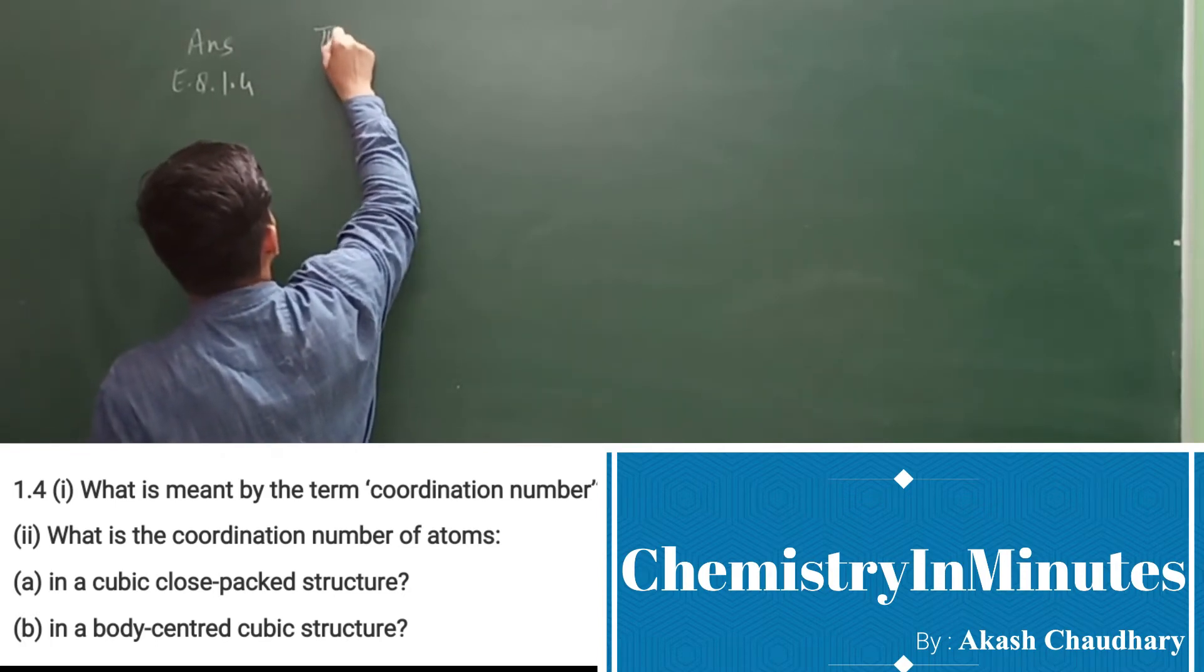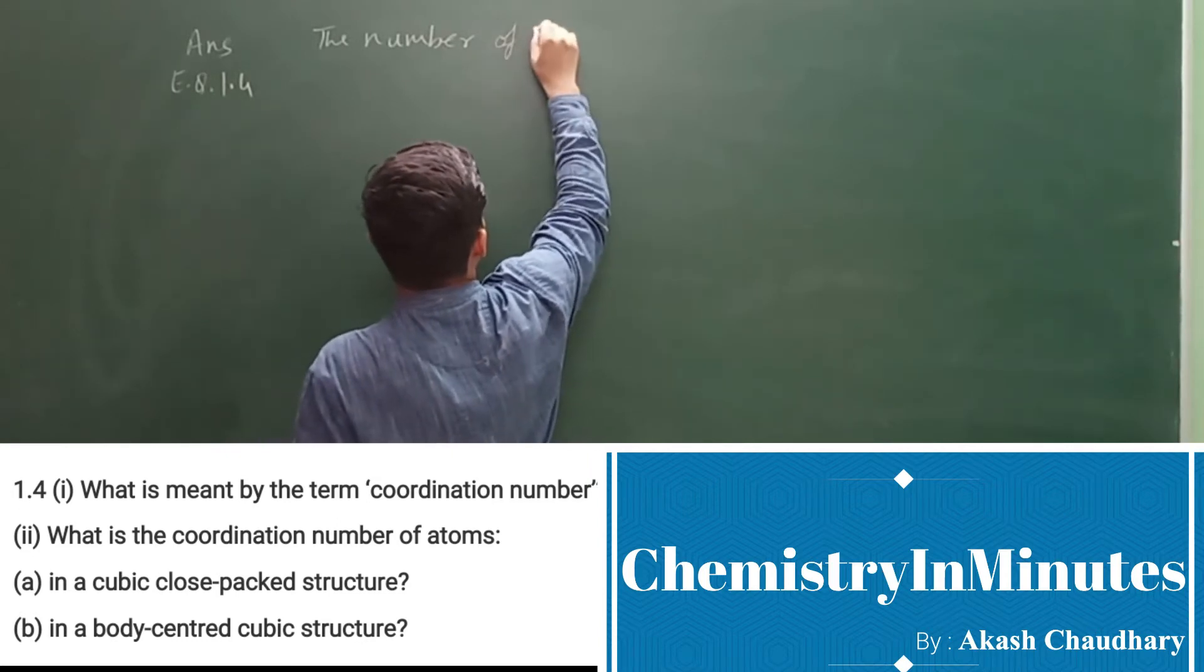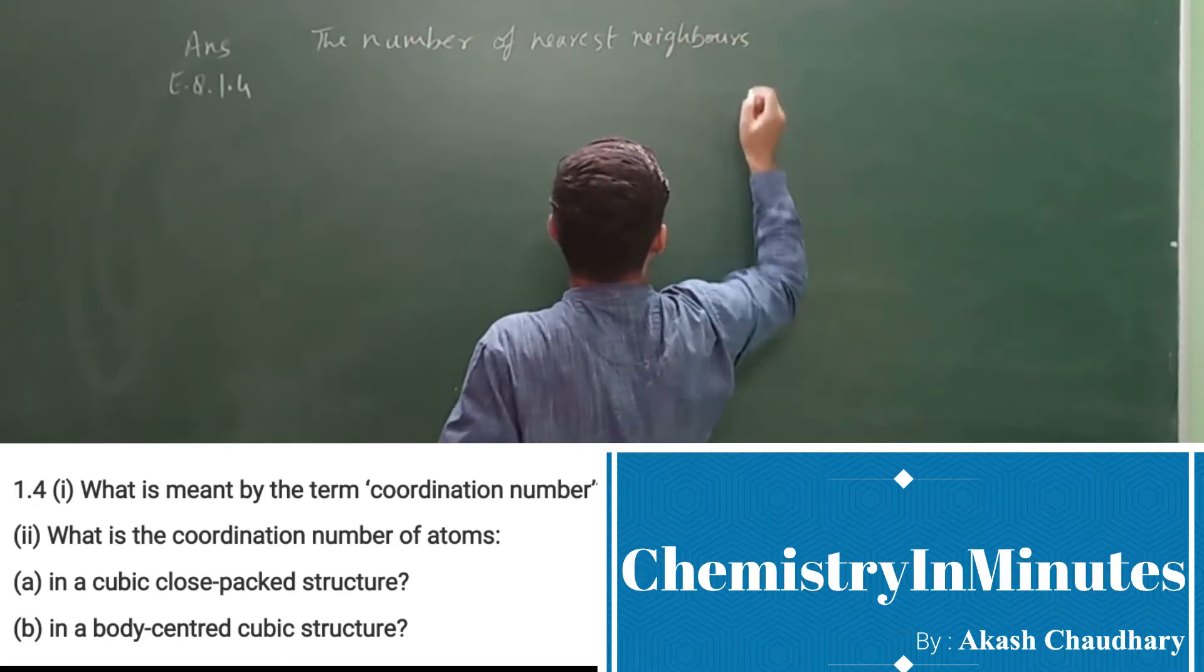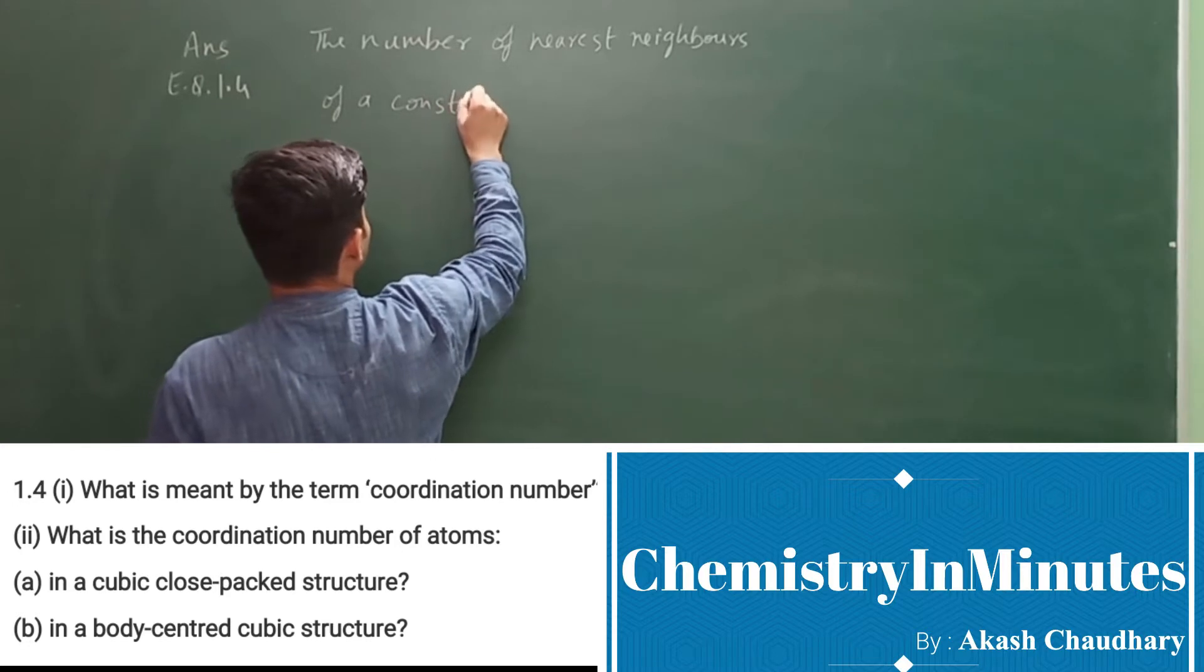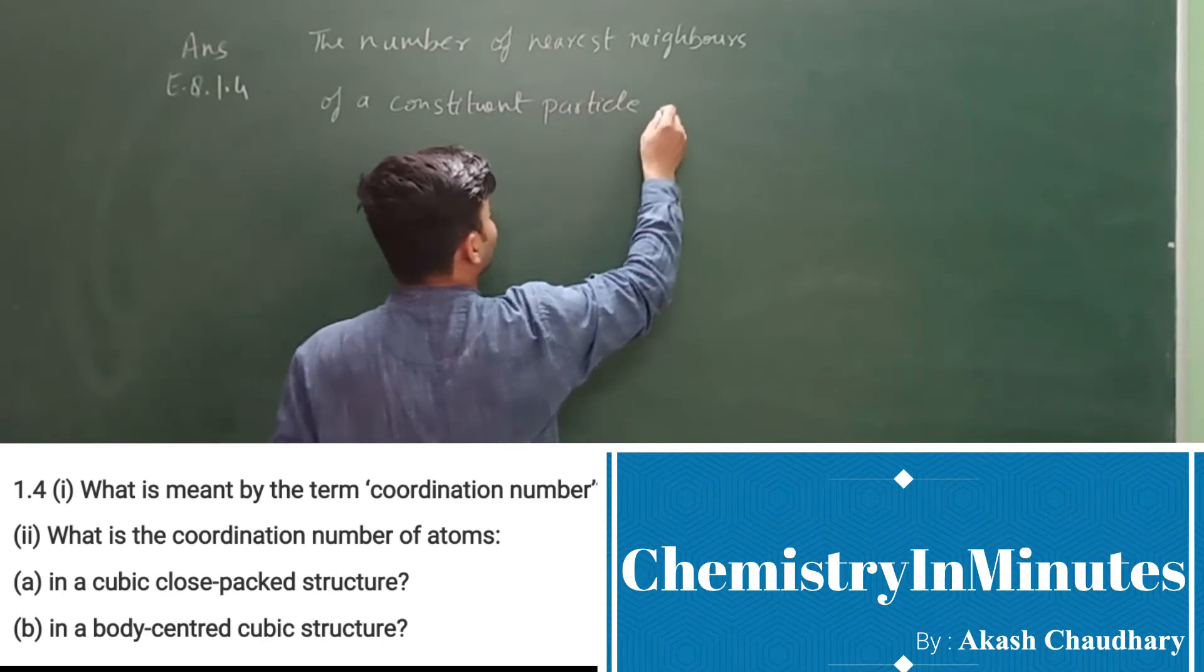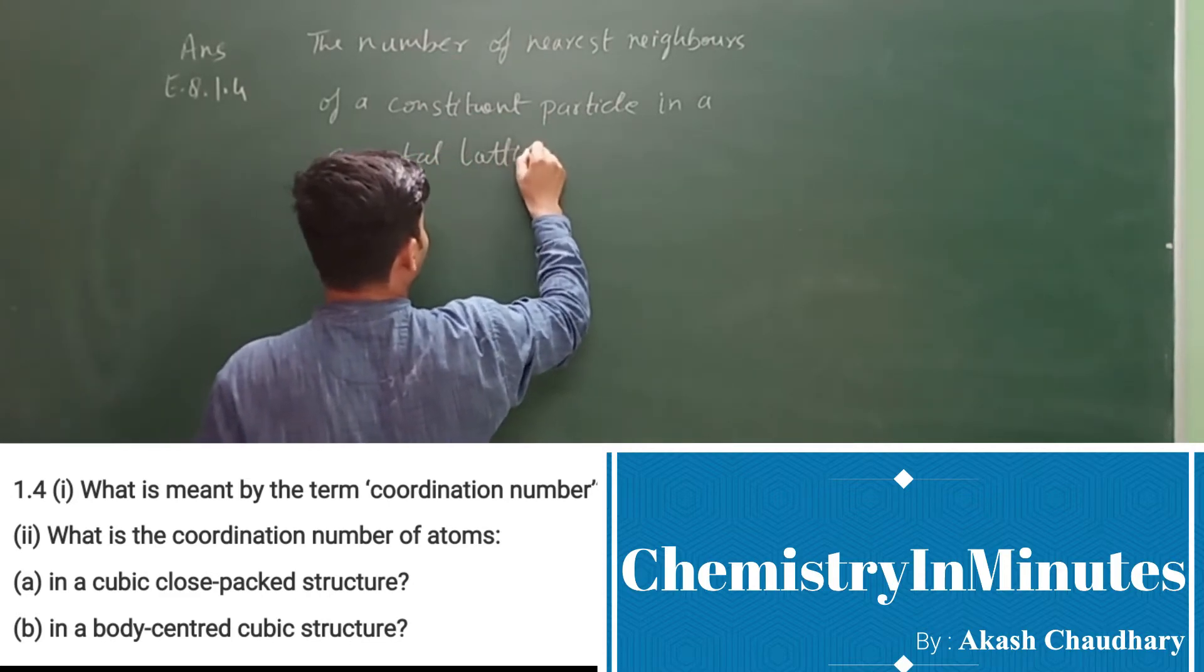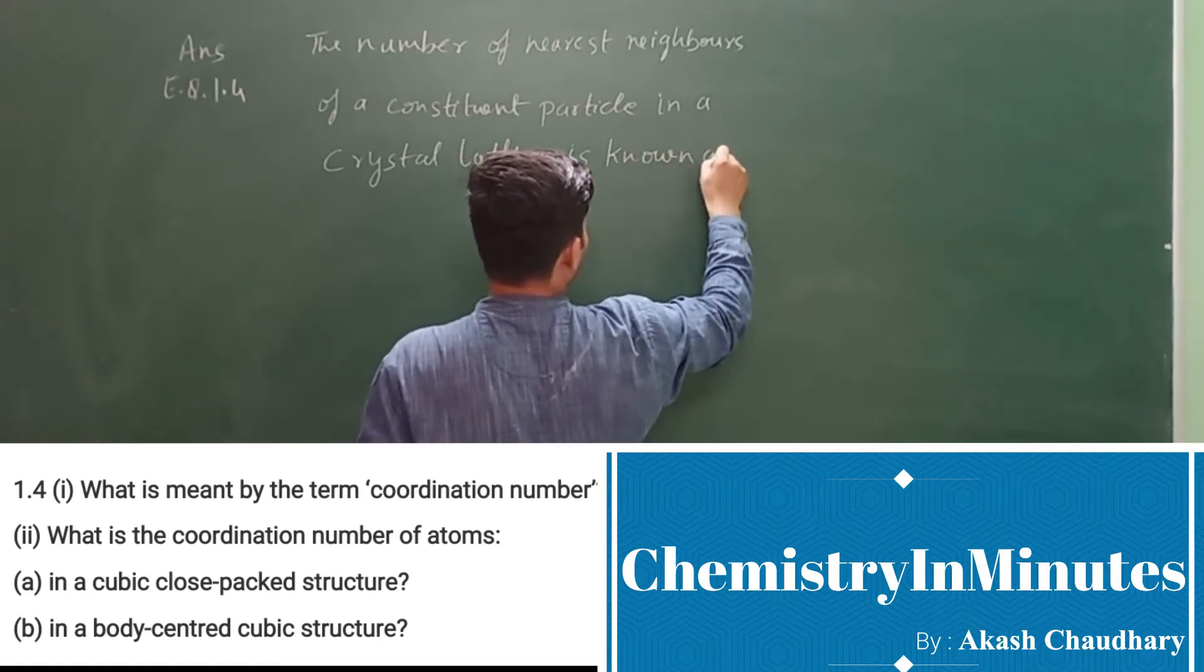The number of nearest neighbors of a constituent particle in a crystal lattice is known as coordination number.